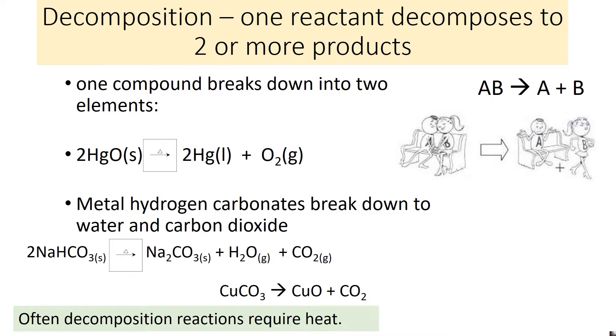Decomposition is the reverse. So one compound breaks down into two elements. So now you see you have AB and it breaks down to A plus B. So it's the reverse. And you can see your couple breaking up. Some examples. HgO breaks down to Hg and O2. So you've got a compound breaking into its elements.